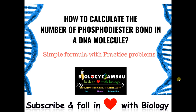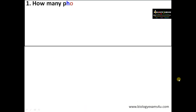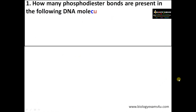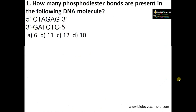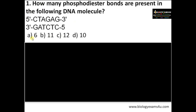Moving to the topic: how to calculate the number of phosphodiester bonds in a DNA molecule. Let's begin with the problem. How many phosphodiester bonds are present in the following DNA molecule? The options are 6, 11, 12, and 10.